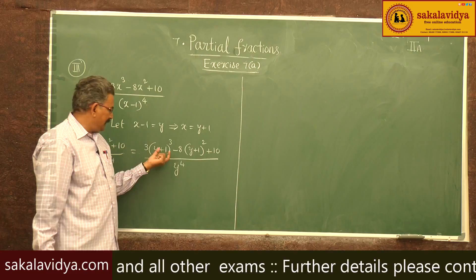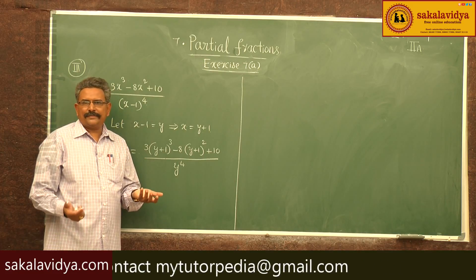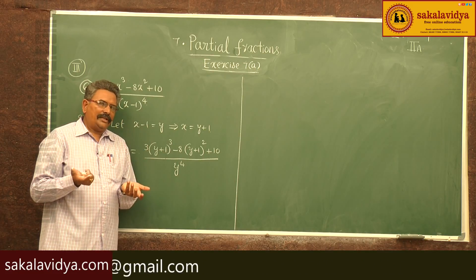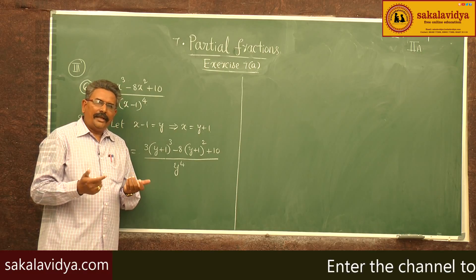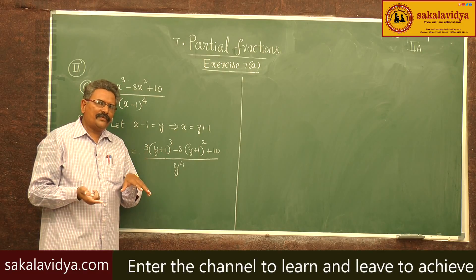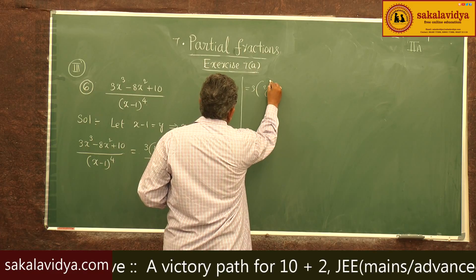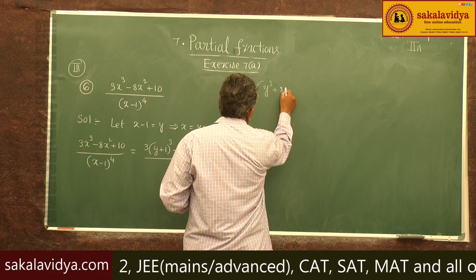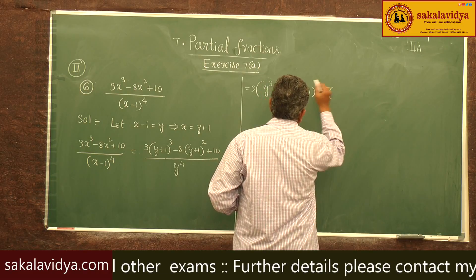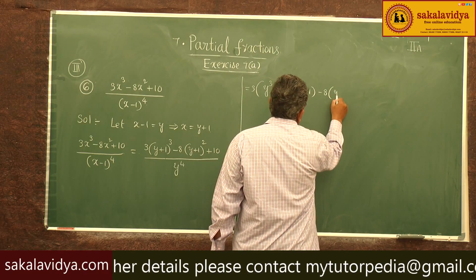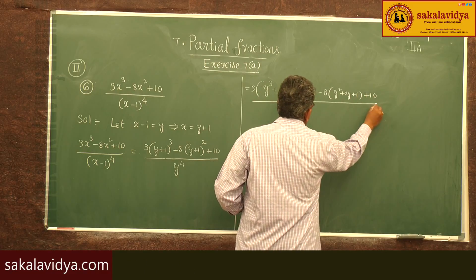Let us simplify. Expanding (y plus 1) cubed using the formula a plus b whole cube equals a cubed plus 3a squared b plus 3ab squared plus b cubed. So we get 3 times (y cubed plus 3y squared plus 3y plus 1), minus 8 times (y squared plus 2y plus 1), plus 10, all divided by y to the power of 4.